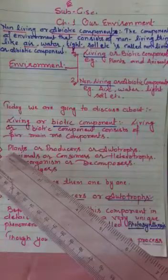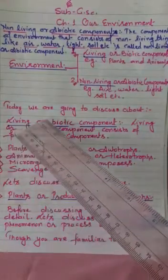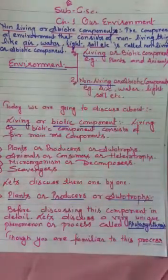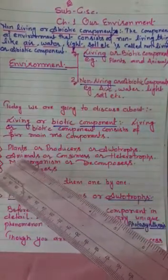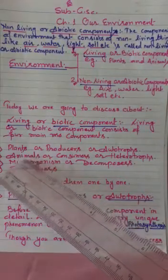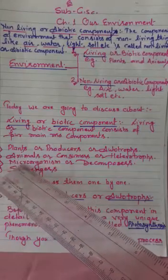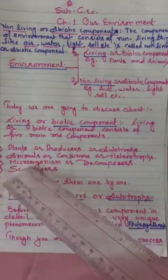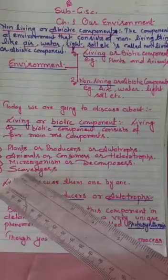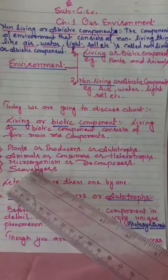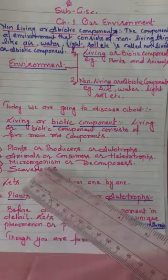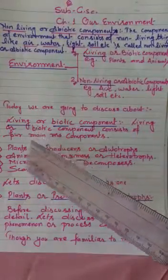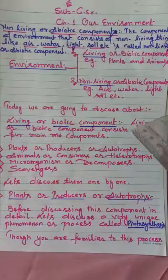You may ask: earlier you told us plants and animals are examples of the biotic component, so where do microorganisms and scavengers come from? My answer is: because there is a vast variety of animals on earth, some are very microscopic like bacteria, and these are put in the category of microorganisms. Scavengers are those birds and animals which help us clean our environment by eating dead animals. All four parts come under the living or biotic component.